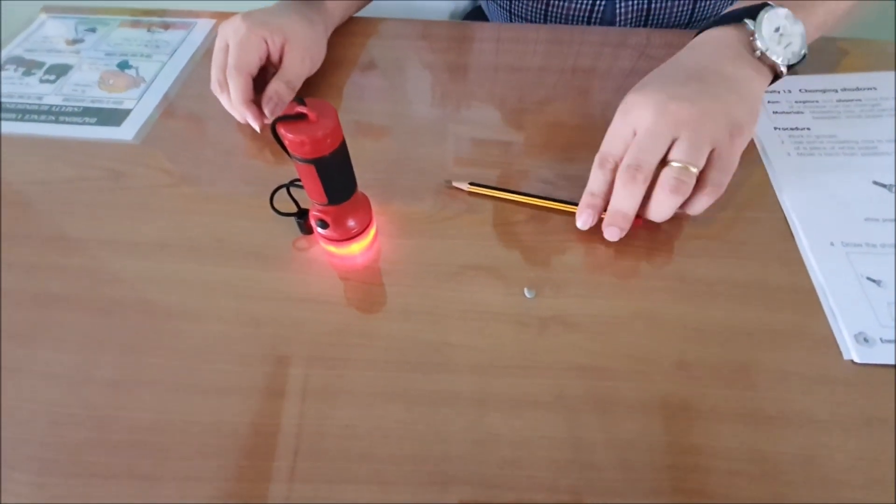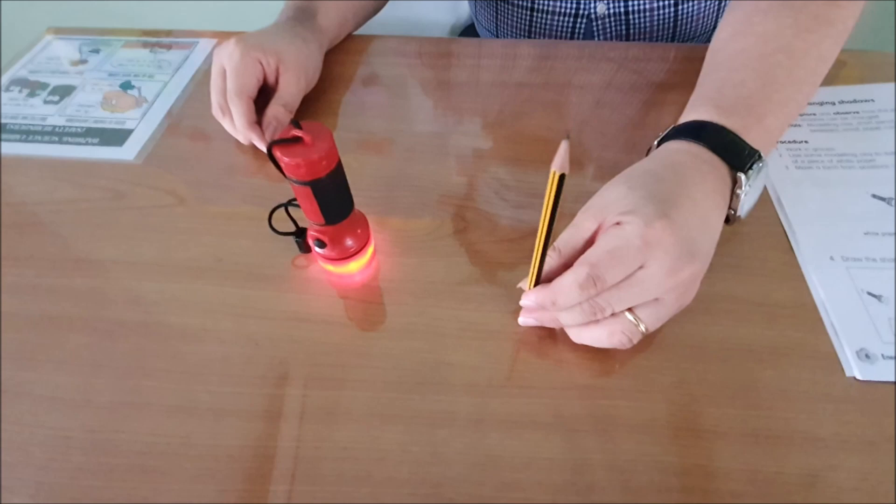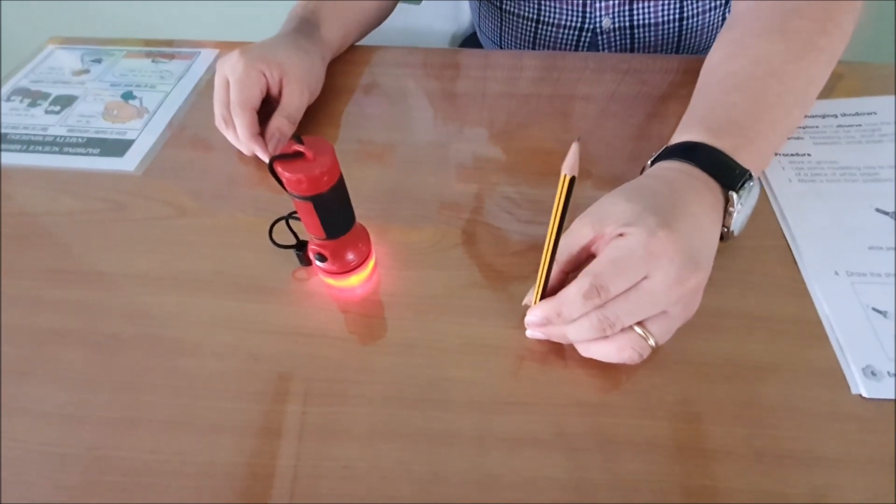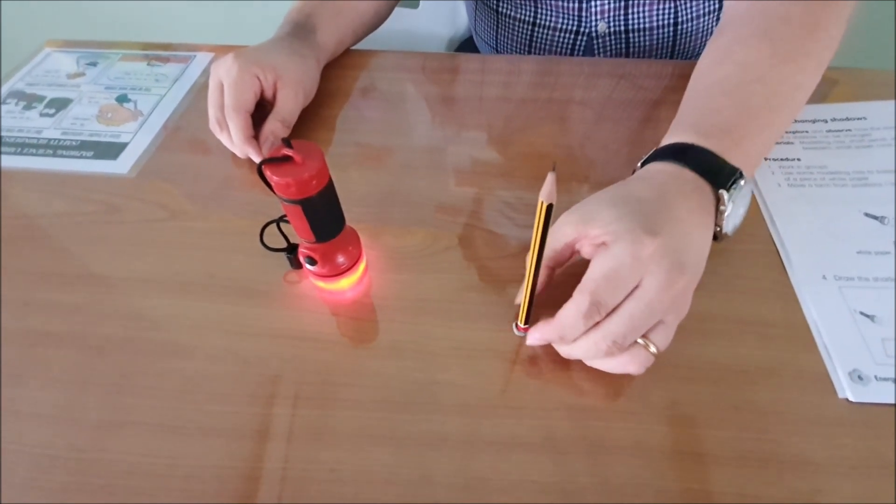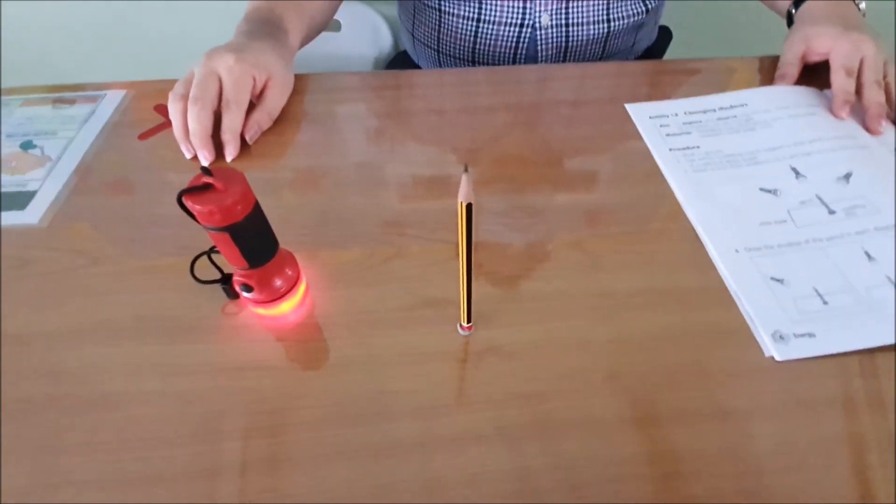The plaster sink is for you to mount the pencil upright, so your pencil is straight on the table.